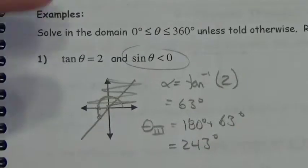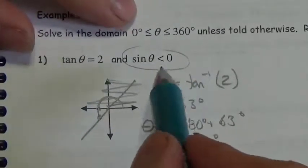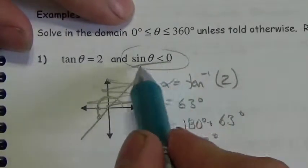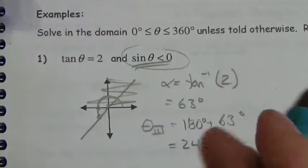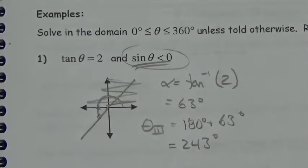That's the only angle we're looking for. In this case, we don't get two answers because the additional bit of information zeros in our attention on just one of the two possibilities.